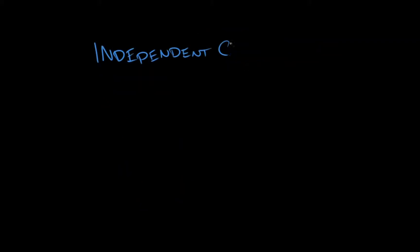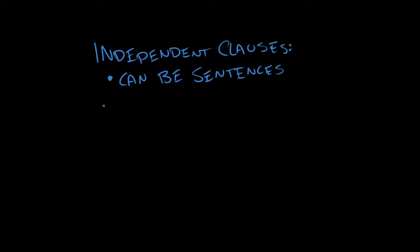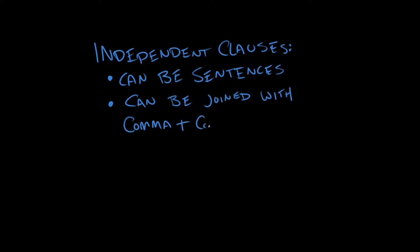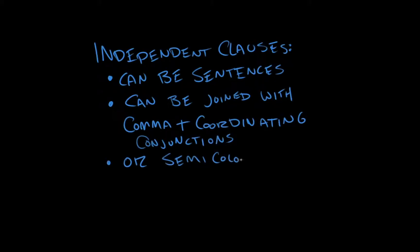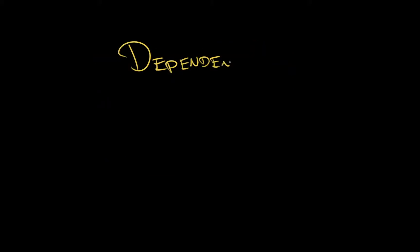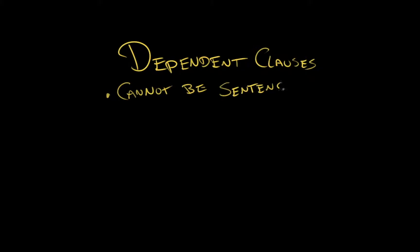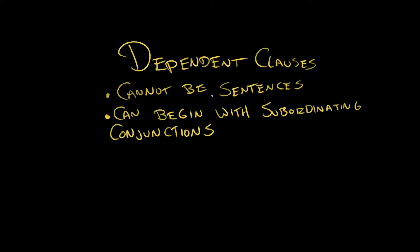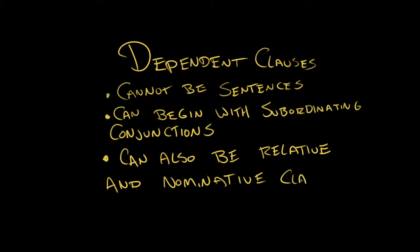Let's recap. Independent clauses can be sentences. Independent clauses can be joined with commas and coordinating conjunctions, or they can be joined by semicolons. Dependent clauses cannot be sentences, and they can begin with subordinating conjunctions like 'because' or 'since.' Basically, any conjunction that is not a coordinating conjunction is a subordinating conjunction — it makes a clause dependent. There are other kinds of dependent clauses also, not just ones that begin with subordinating conjunctions. Dependent clauses can also be relative and nominative clauses.